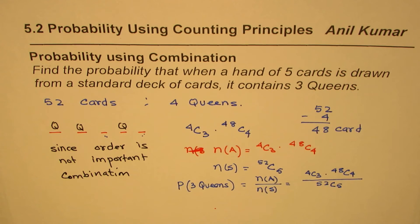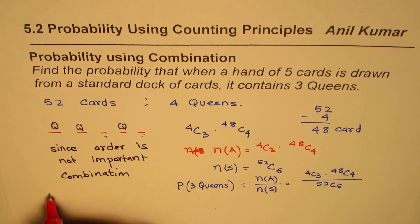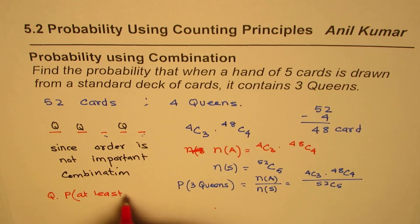You can always take the calculator, calculate the answer and write it down. You have the combination formula there - plug it in, find the answer and write it down. I hope that helps the concept of how to find the probability of getting 3 queens. As an extension to this question, you can ask: What is the probability of getting at least 3 queens in a hand of 5 cards?